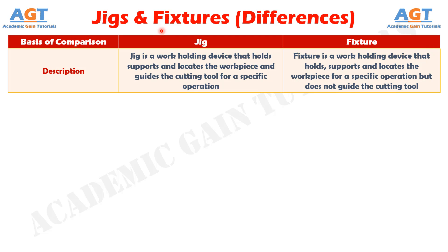A jig is a work holding device that holds, supports and locates the workpiece and guides the cutting tool for a specific operation. A fixture is a work holding device that holds, supports and locates the workpiece for a specific operation but does not guide the cutting tool.